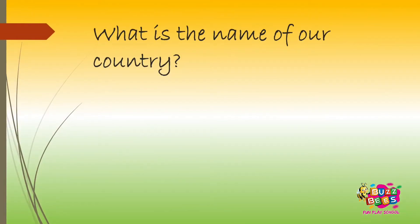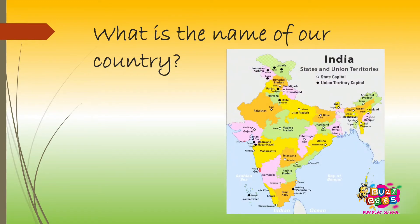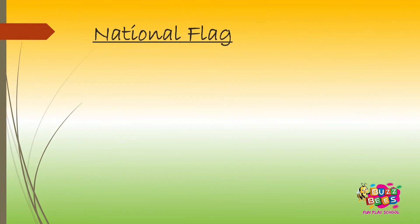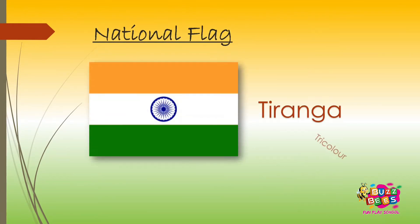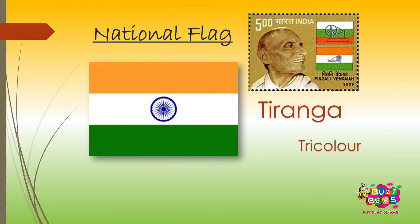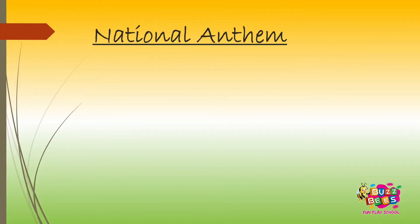What is the name of our country? India. Look at this, this is our India. What is our national flag? It is also called the tricolor. The flag has three colors: saffron at the top, white in the middle with the blue Ashoka Chakra, and dark green at the bottom. It is designed by Pingali Venkayya.